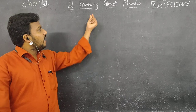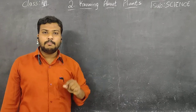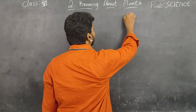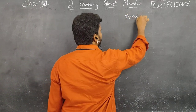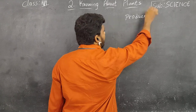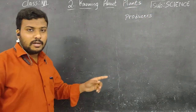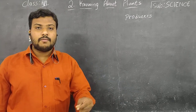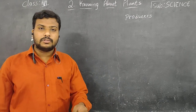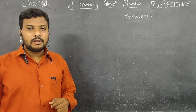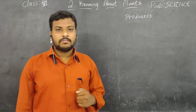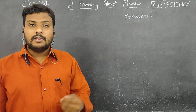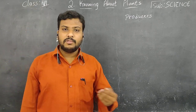Plants are primary producers — means they produce. They can produce a wide variety of foods and objects. Foods — we know: fruits, vegetables, and dried fruits — we are all getting from plants.